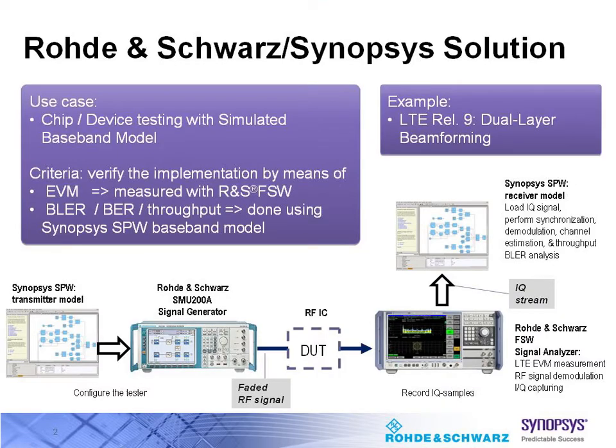An important stage in the design process of a component of a communication system is the verification of its implementation. For this, we may need to measure baseband characteristics such as throughput of the system, as well as signal characteristics such as error vector magnitude.